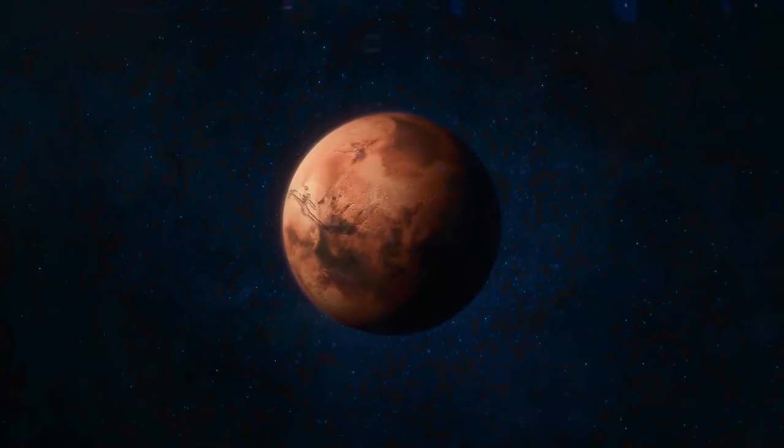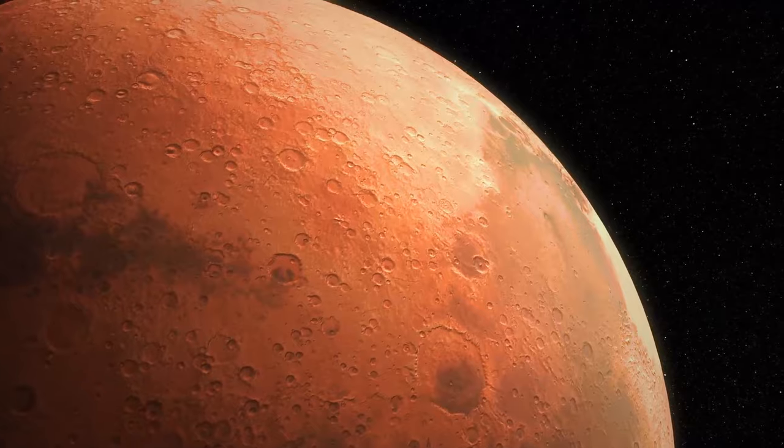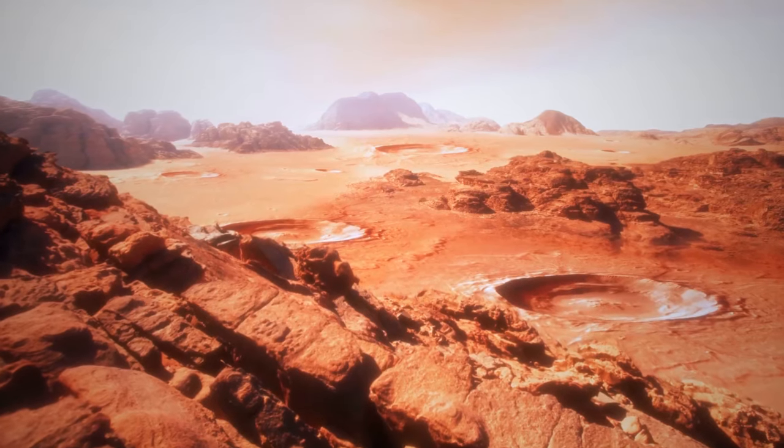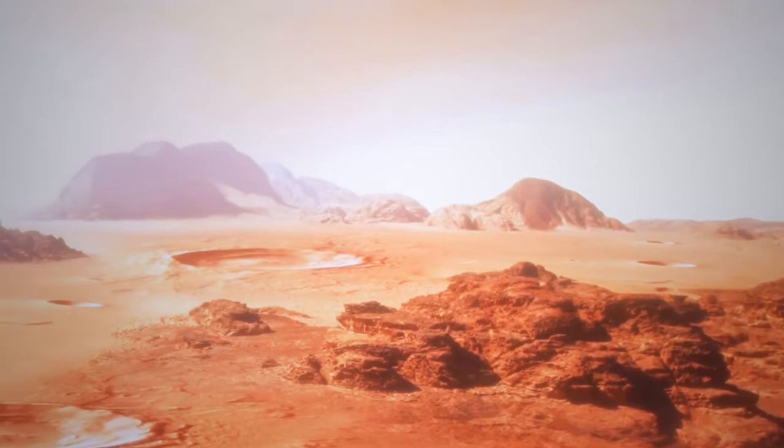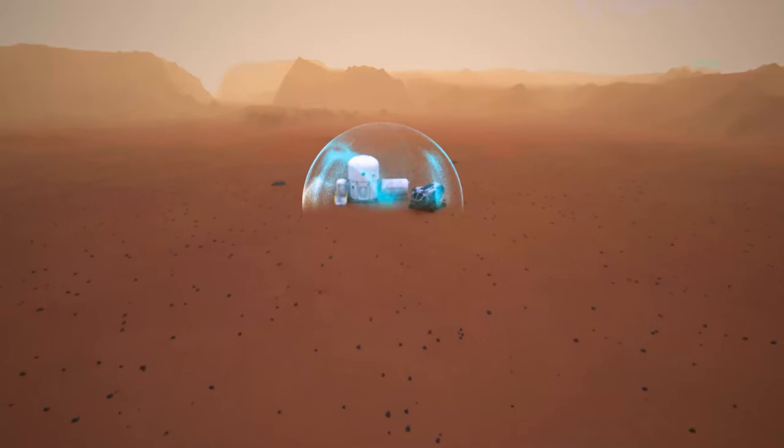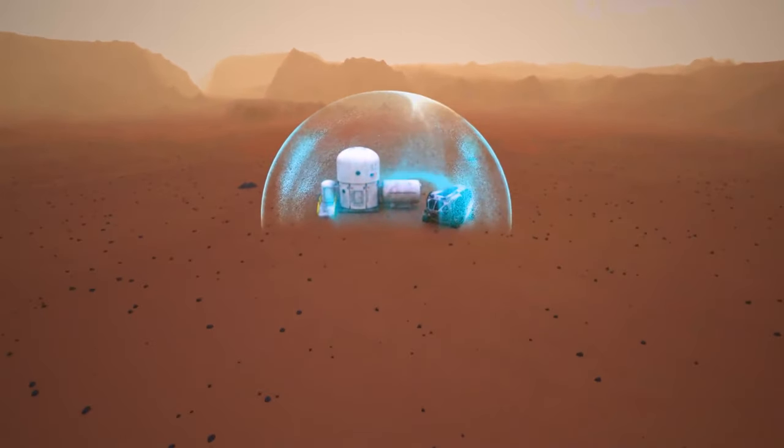The same is true for other planets. We're probably going to colonize Mars. There is no magnetic field there, and nothing can protect you from radiation. But if you create an artificial bubble there, you can reduce the harmful radiation.